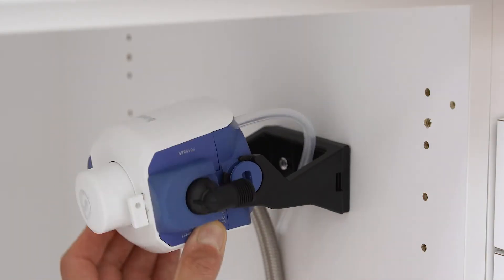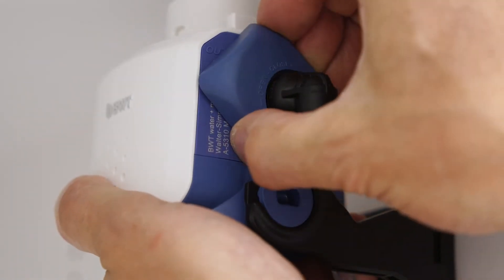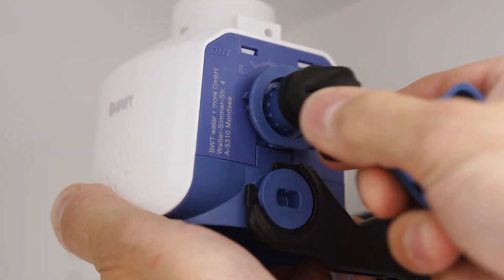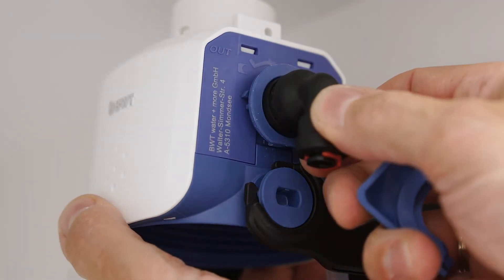Then place the filter head in the black wall bracket. Remove the elbow on the outlet side and mount either 6 or 8 millimeter push-in fittings.